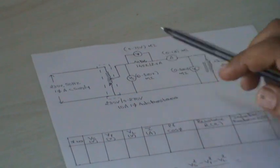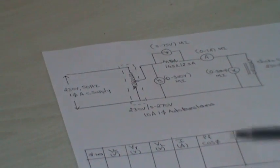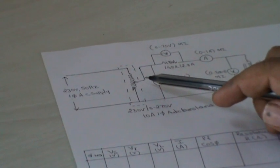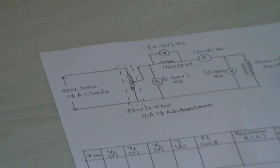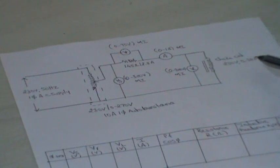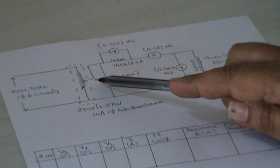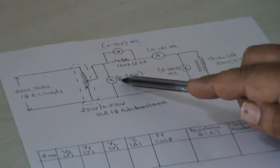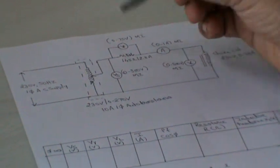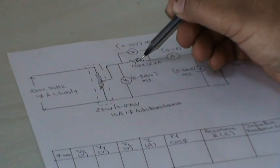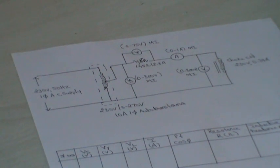In this setup, we have to use an auto transformer to vary the voltage, and we will be using a Choke Coil rated at 230 volt and 0.39 amp. We need to set up the supply voltage and vary the resistance. I will be using a variable resistor — a rheostat.